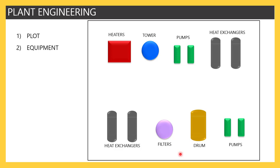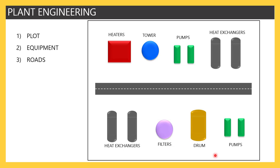After arranging the equipment, the very next thing is accessibility. We must be able to access each piece of equipment, so we need to provide roads. Roads are built by civil engineers, but the piping design engineer has to allocate the space for them. If you do not plan roads at the very beginning, other items will come into the picture later and you may not be able to plan properly. Plot identification, equipment placement, and roads are the very major primary activities that must be done at the initial stage of the project.